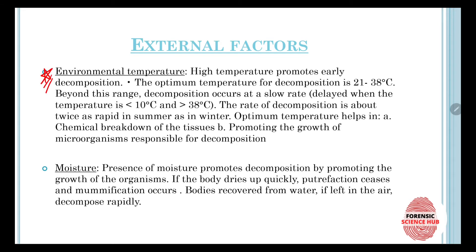The most important external factor is environmental temperature. High temperature promotes early decomposition — the higher the temperature, the earlier putrefaction starts. The optimum temperature for decomposition is 21 to 38 degrees Celsius. Beyond this range, decomposition occurs at a slower rate. If the temperature is less than 10 degrees or more than 38 degrees, the decomposition process gets delayed.